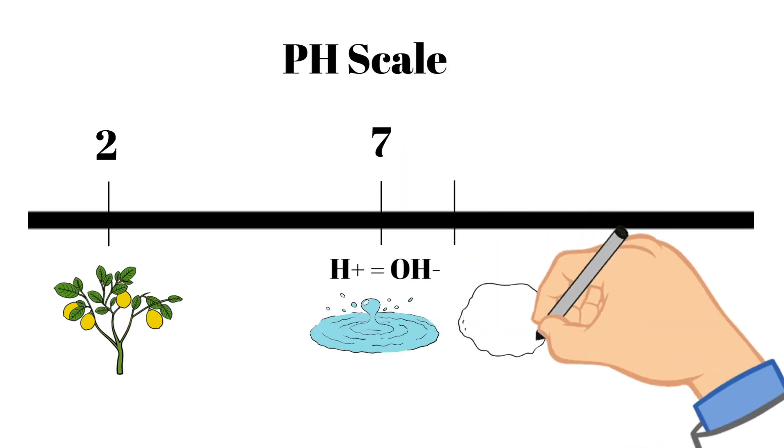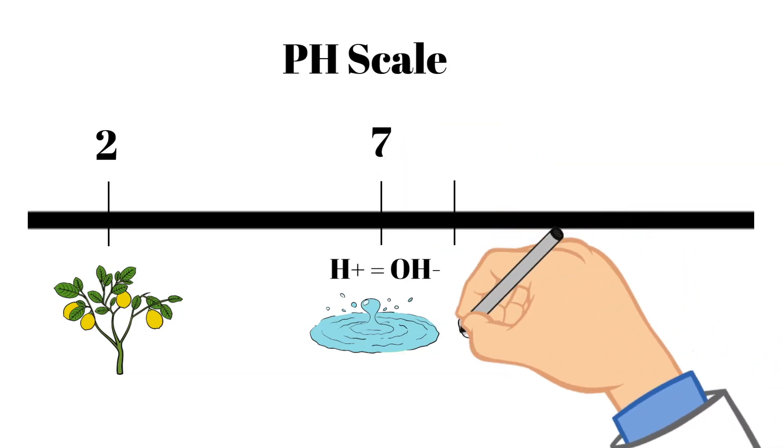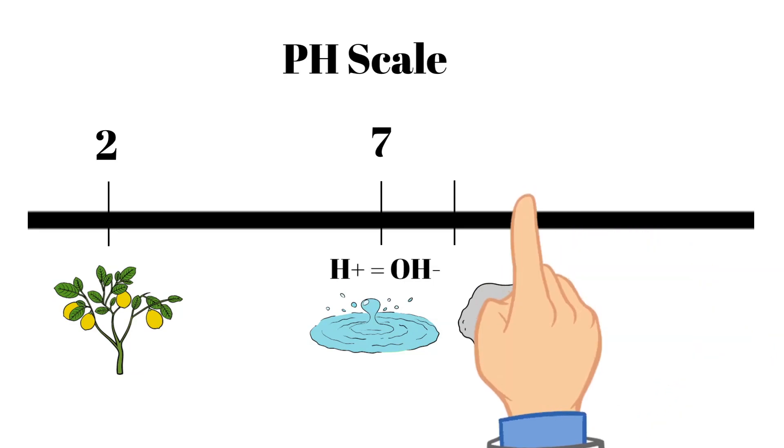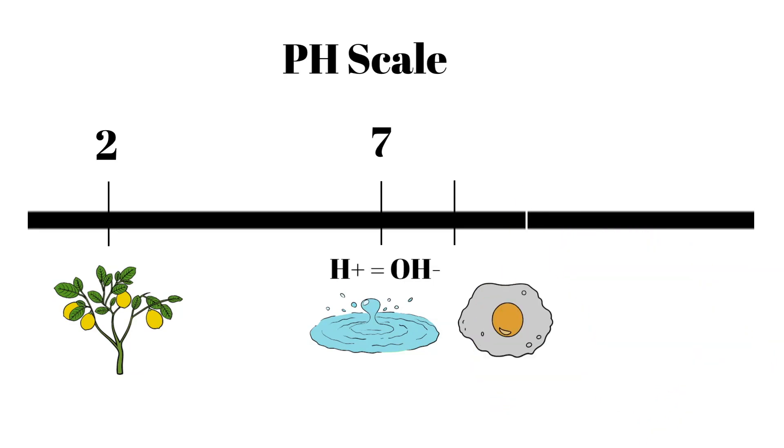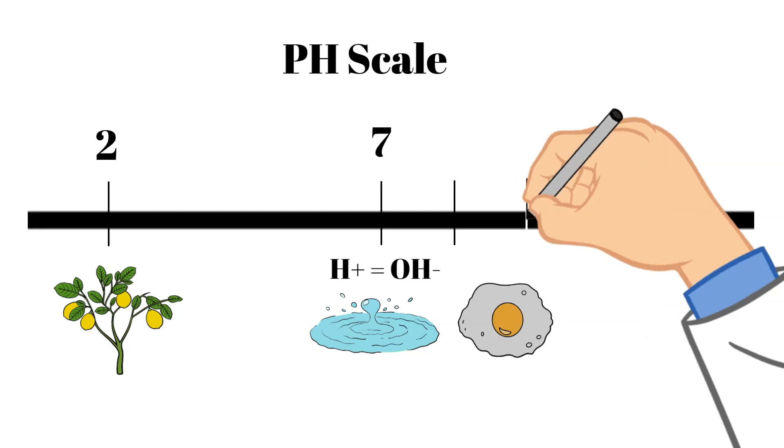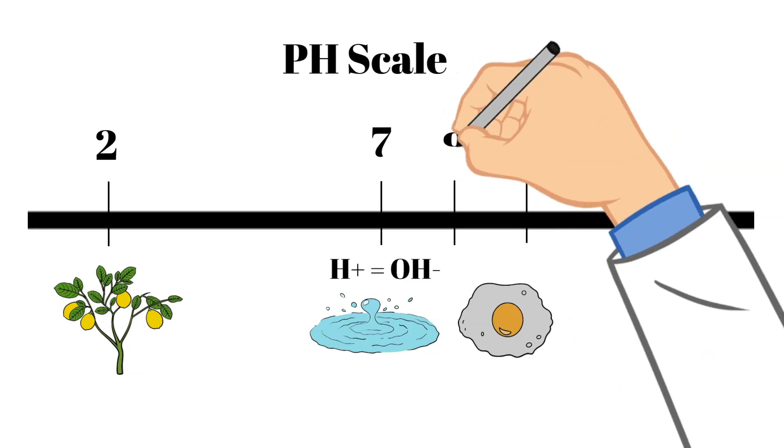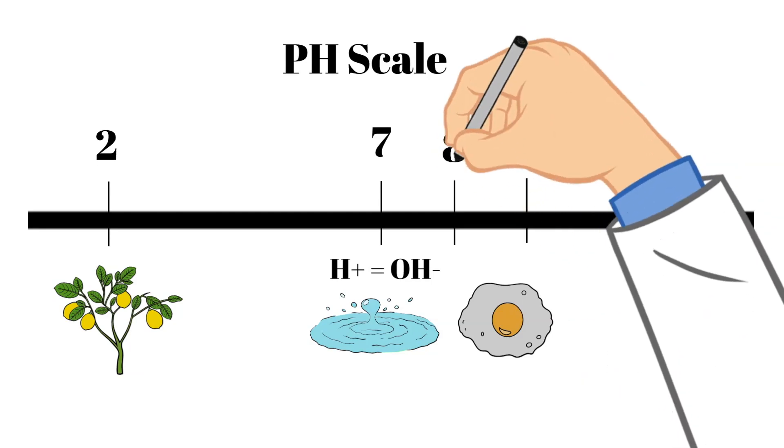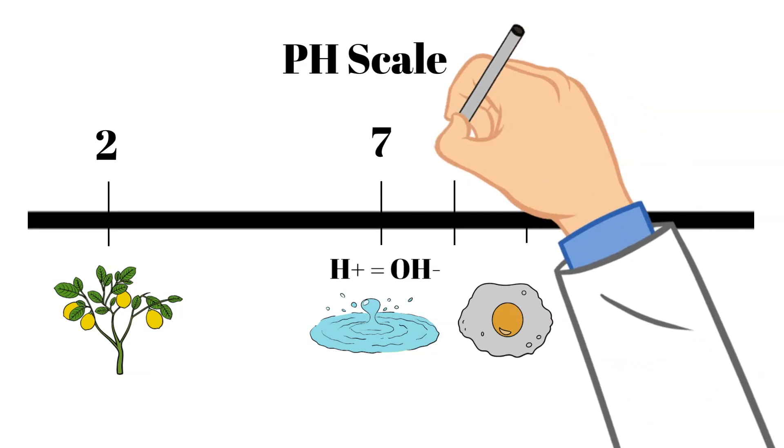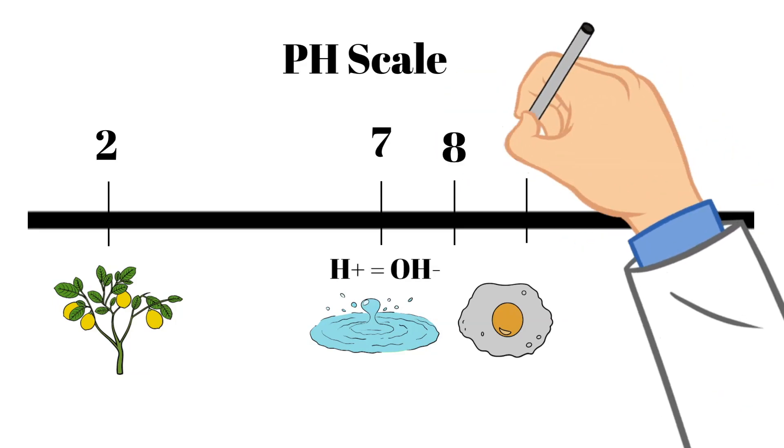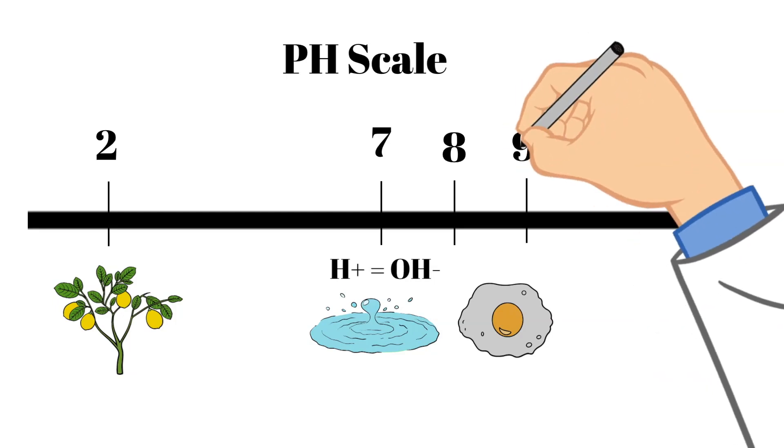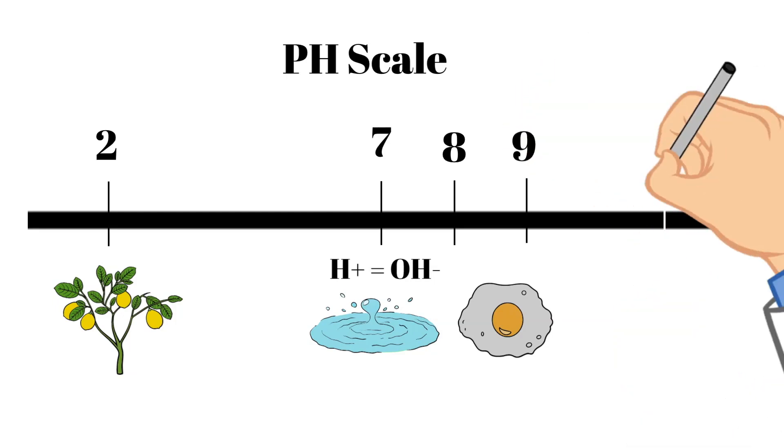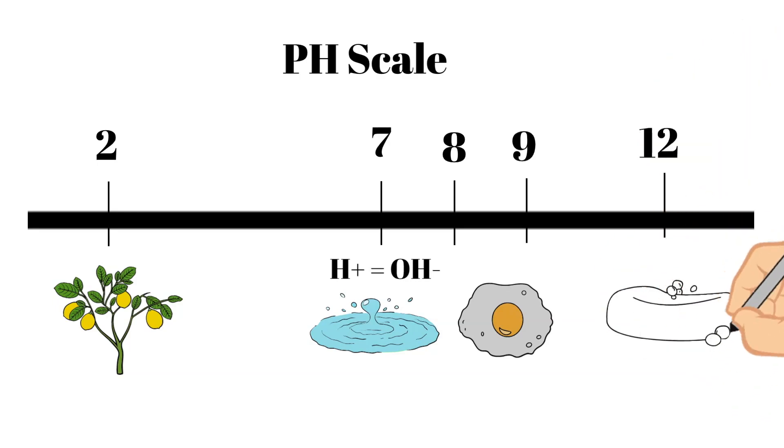Now if we look to the right of a pH of seven, everything to the right or greater than seven are basic. And it means it has a lower concentration of hydrogen ions. The higher the pH, the stronger the base. So eggs, for example, have a pH between eight and nine. Whereas most soaps are actually around a pH of 12.